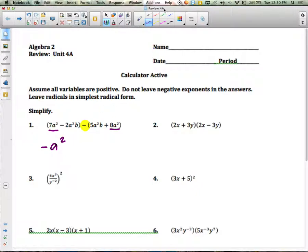Then we look for more like terms. I have a negative 2a squared b, and there's an a squared b here. So these two are like terms. So I'm going to go negative 2 minus 5, and if you have a negative 2 and you subtract 5, you end up with negative 7a squared b. So it's just an issue of combining like terms for the first question.